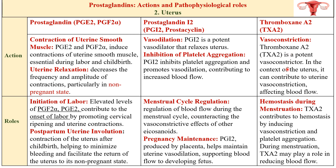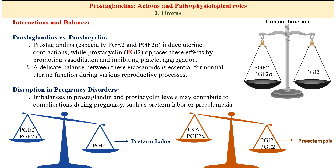Thromboxane A2 is a potent vasoconstrictor that decreases the blood supply to the uterus. As the endometrium lining breaks down and is shed during menstruation, blood vessels are exposed and blood flow starts. The vasoconstrictive effects of thromboxane help minimize bleeding by narrowing these blood vessels and reducing overall blood flow to the uterus. Prostaglandins E2 and F2α induce uterine contractions while prostacyclin opposes these effects by promoting vasodilation and inhibiting platelet aggregation.